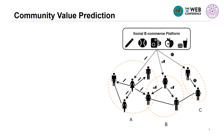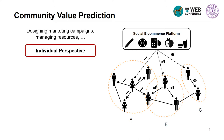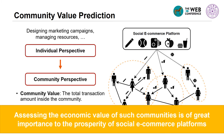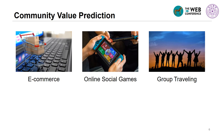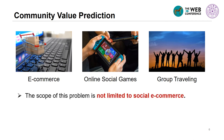For related companies, their focus has shifted from an individual perspective to a community perspective. Assessing the economic value of such communities, we find that the total transaction amount inside the community is of great importance to the prosperity of these platforms, because they typically make their marketing campaigns towards communities and manage resources around communities. This problem is also receiving increasing attention in research communities beyond social e-commerce — for example, in online social games, friends typically play together in a team; for online travel planning, a group of travelers can make their trip plan together. Thus, the key concern of related companies is also shifting from an individual to a group perspective.